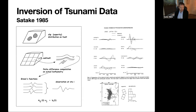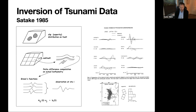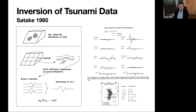The third problem is of course it's not real-time, so you cannot use this method for real-time assessment. There's also a fourth problem: the quality of the inversion solution depends on the quality of the model used to generate the Green's functions — the direct tsunami propagation problem. These models were fairly crude at that time, which is exactly when I started getting into tsunami modeling.